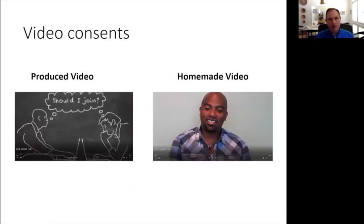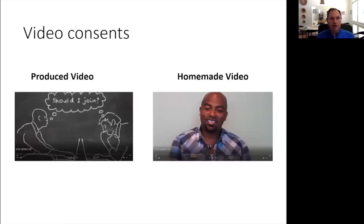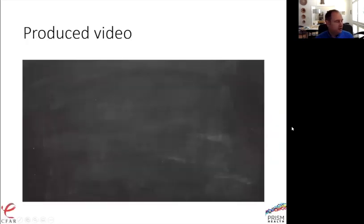One video was professionally produced — we hired a company to make it. The other was a colleague named Anthony who sat down with a camera and used the same script but just talked to the camera. Our question: if you're going to use video consent, does it need to be visually interesting with high production value, or can it be done cheaply and simply with a phone camera?